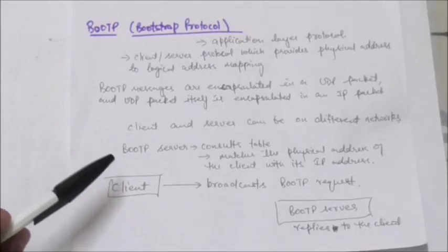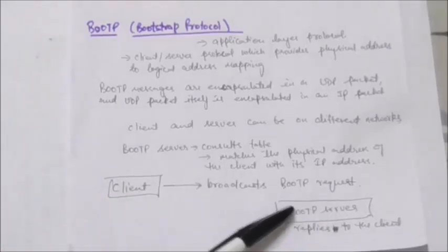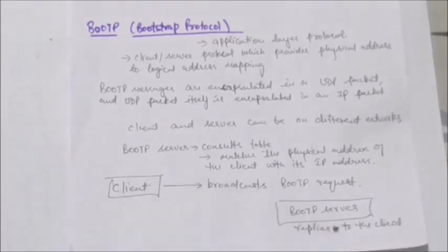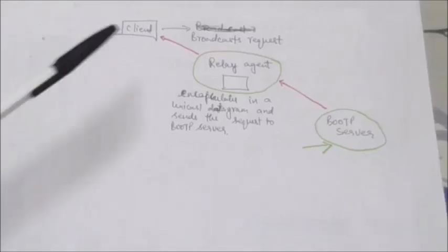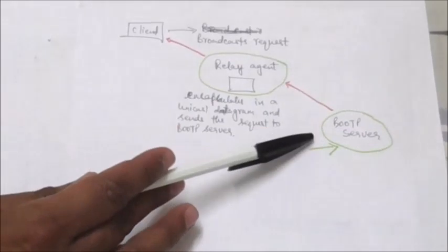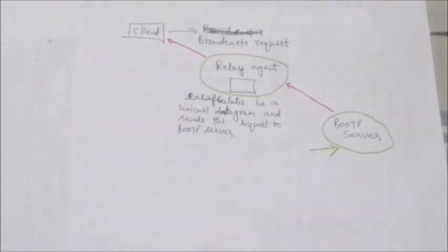When a client knows its physical address and needs an IP address, it broadcasts a Bootstrap Protocol request. This request is picked up by the Bootstrap Protocol server, which replies to the client. However, if the client is in one network and the Bootstrap Protocol server is in another network, there is a problem: the broadcast request cannot pass through any router, and therefore there is a need for an intermediary.